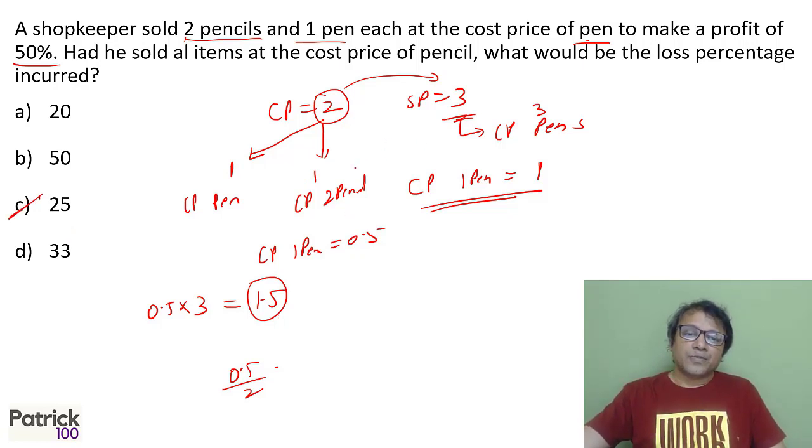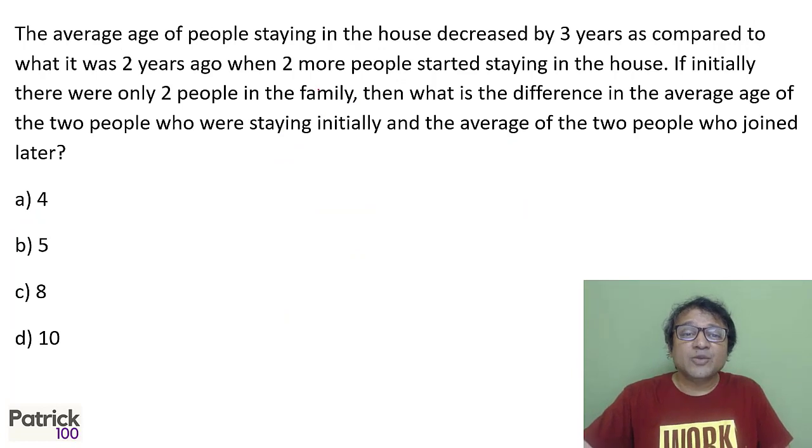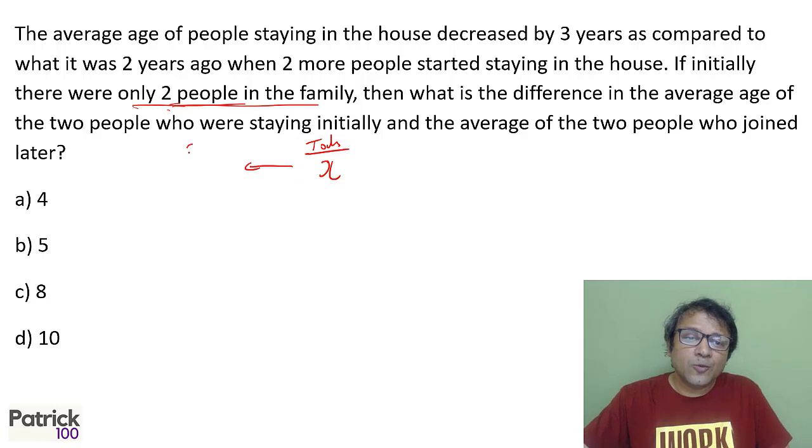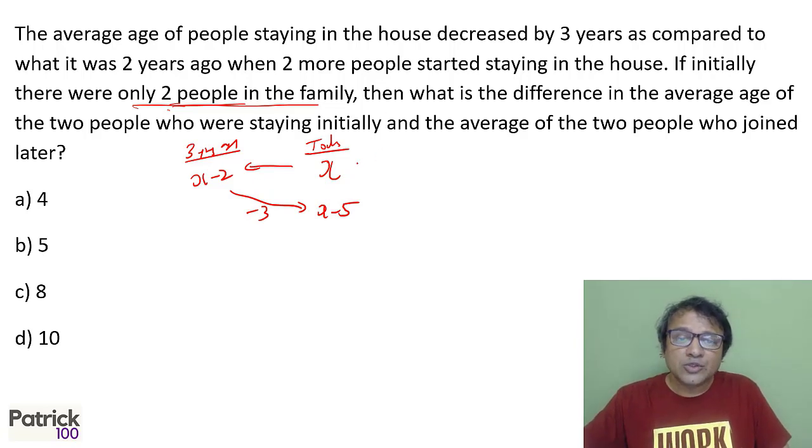The average age of people staying in a house decreased by three years compared to two years ago when two more people joined. Initially there were only two people. Let the average today be X for two people. Two years ago it was X. Now with the new people, the average is X minus 3 for four people total.